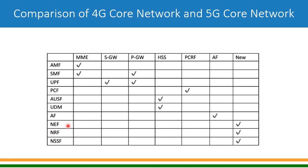NRF, Network Repository Function, is also new in 5G. Since it is a service-based architecture and API-based interaction happens between nodes, the discovery of nodes is done by NRF. NSSF, Network Slice Selection Function, is also new. The 5G network can be broken into various slices for various services: a separate slice for enhanced mobile broadband, a separate slice for ultra-reliable low-latency services like autonomous cars or remote surgery, and a slice for massive machine-type communications like sensors and IoT.